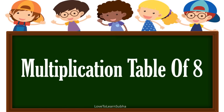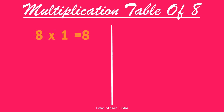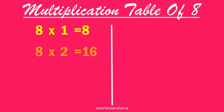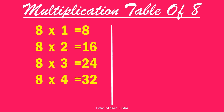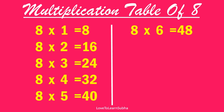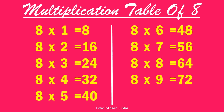Multiplication table of 8. 8 one is 8, 8 two is 16, 8 three is 24, 8 four is 32, 8 five is 40, 8 six is 48, 8 seven is 56, 8 eight is 64, 8 nine is 72, 8 ten is 80.